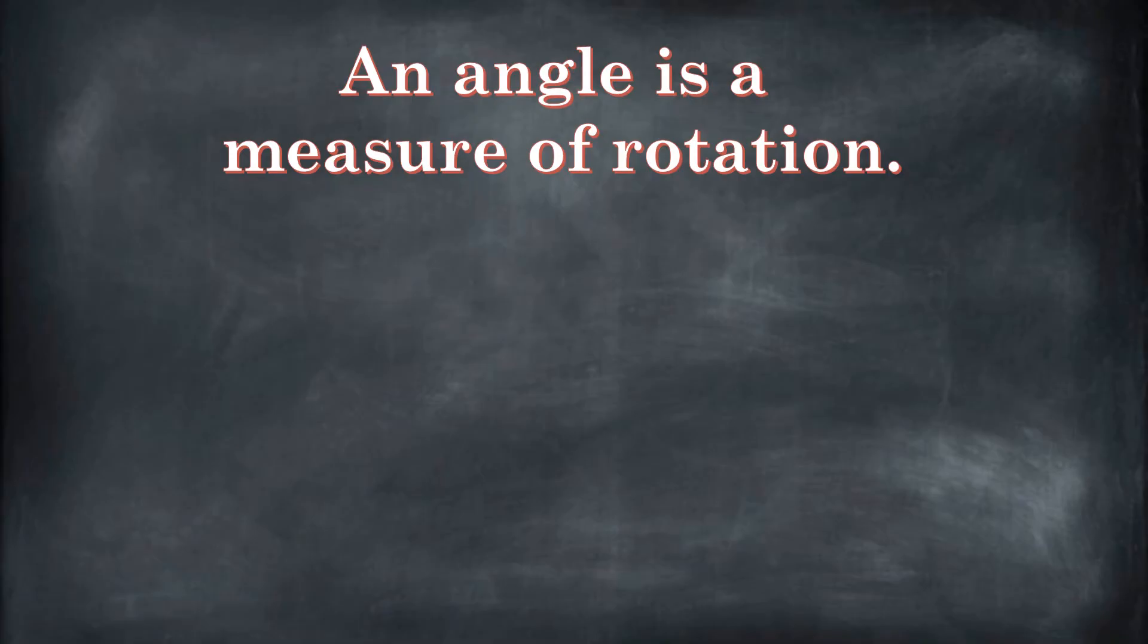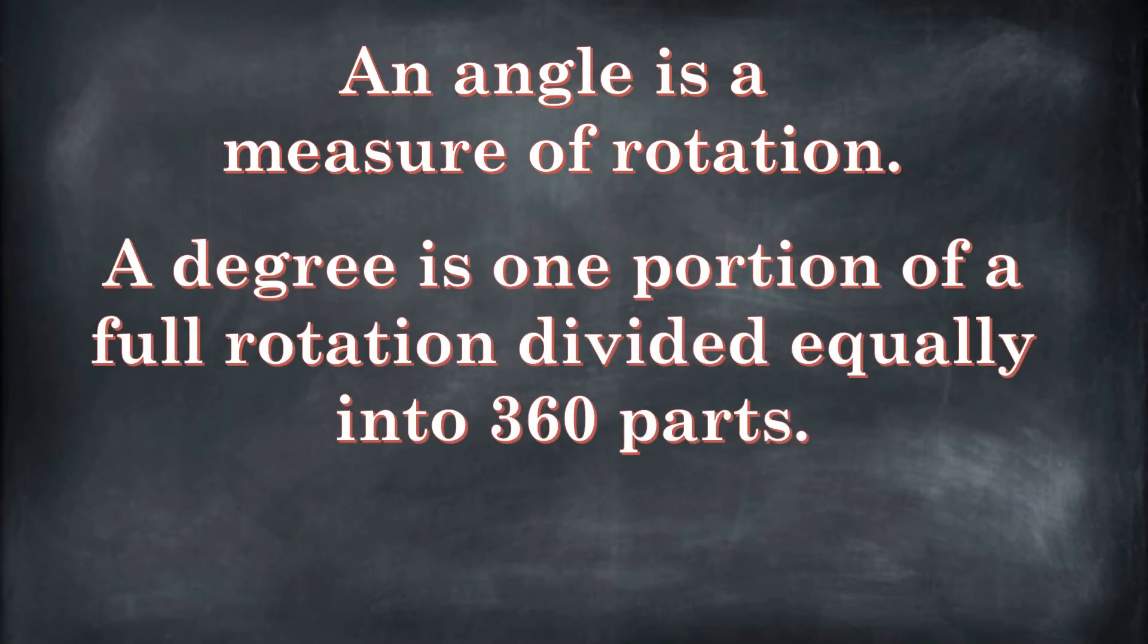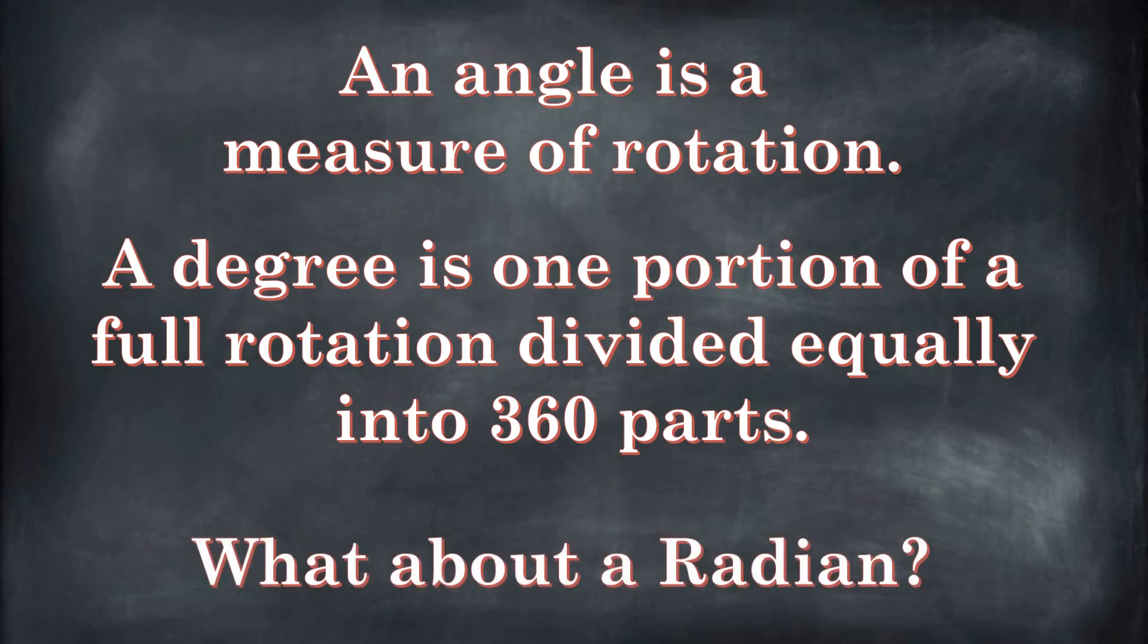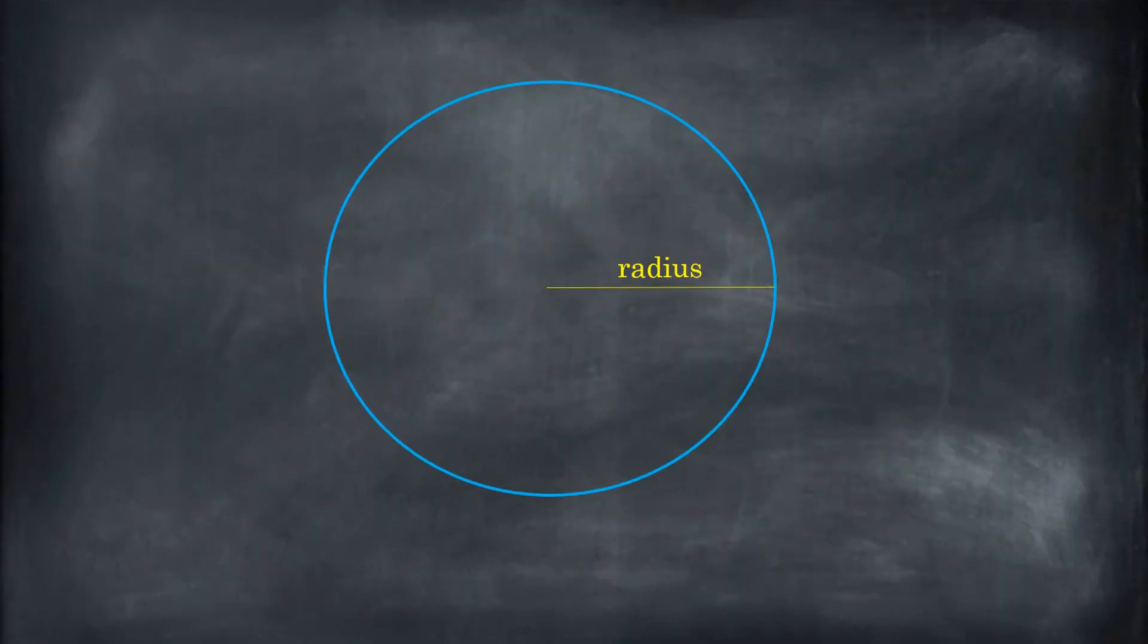An angle is a measure of rotation. Degrees are a unit we can use, and a degree is one portion of a full rotation that's been divided equally into 360 parts. Now, let's get into the radians.